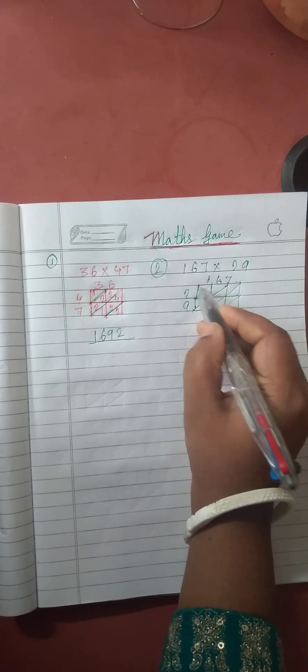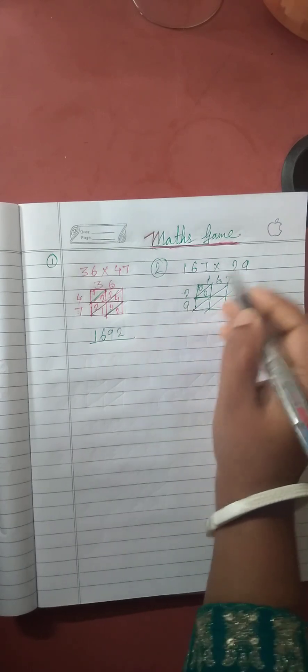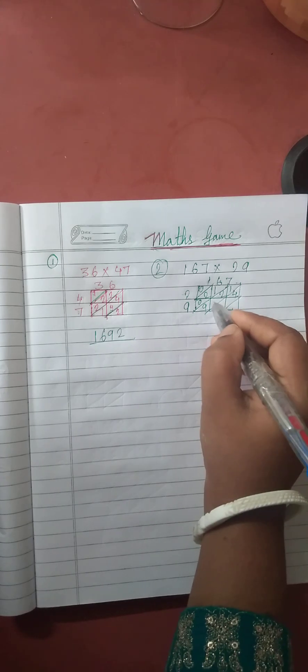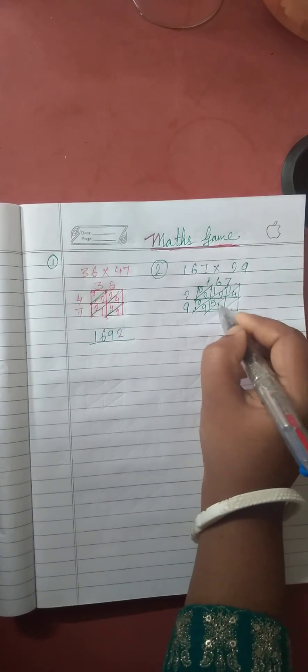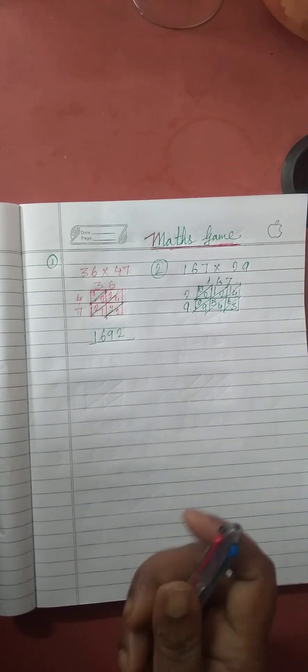And then we have to multiply in this way. Two times one is two — zero, two is here. Two times six are twelve — twelve is here. Two times seven is fourteen — fourteen here. Nine times one is nine — zero, nine here. Nine times six are fifty-four — fifty-four here. And then nine times seven is sixty-three — sixty-three here.